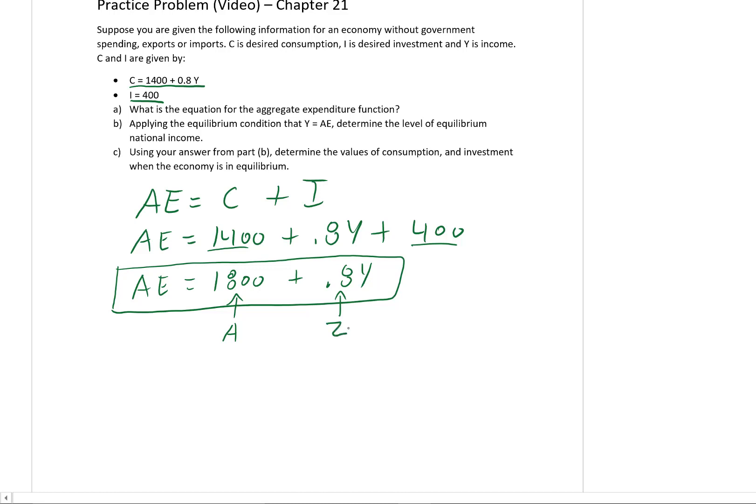So this is the Z that you've seen in your textbook, which just equals B in this really simple model, but in future models it's not necessarily just going to be equal to B. So what's the equation for the aggregate expenditure function? It's AE equals 1800 plus 0.8Y.